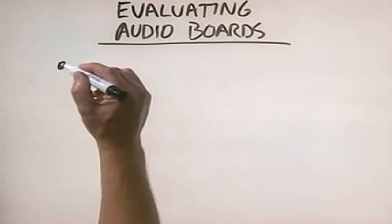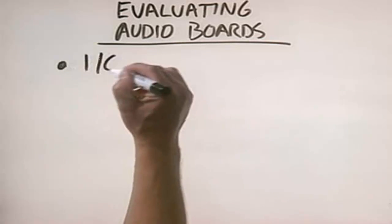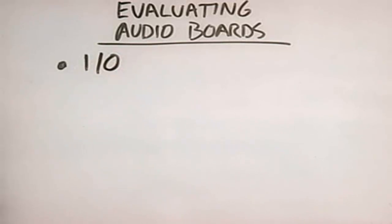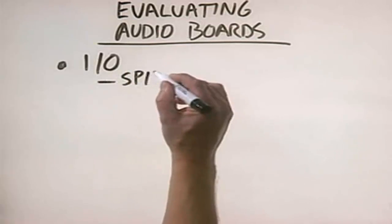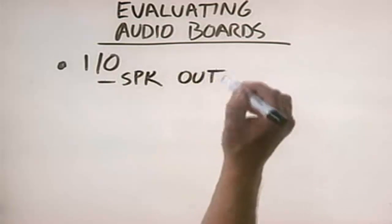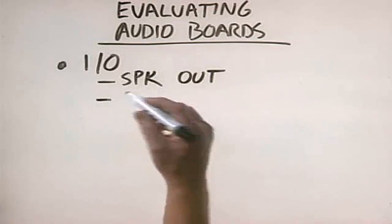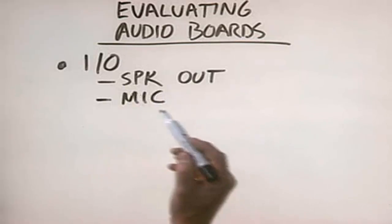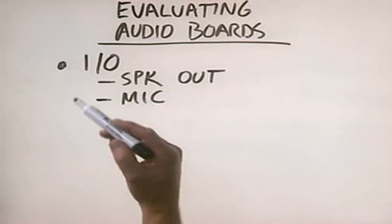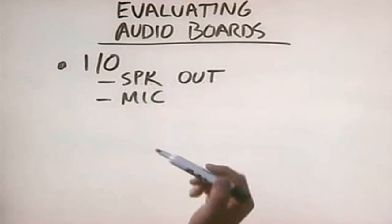The first thing you need to look at is input and output through the board. What is it that you want to do with the board? A basic sound board will usually have a speaker out connector and probably a microphone connector as well into which you can plug a microphone. This allows you to input audio through the microphone and also send audio out to the speakers.